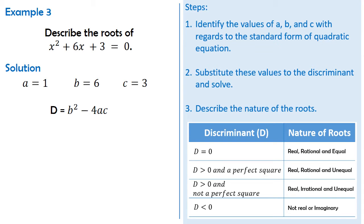Step 2: Substitute. So we have 6 squared minus the product of 4, 1, and 3. 6 squared is equal to 36, and the product of 4, 1, and 3 is 12. So we have 36 minus 12, and that is equal to 24.